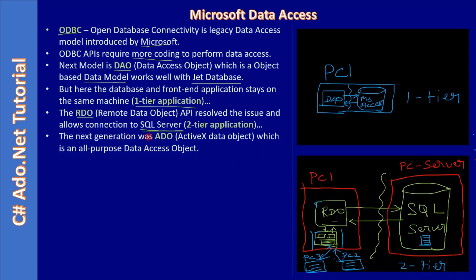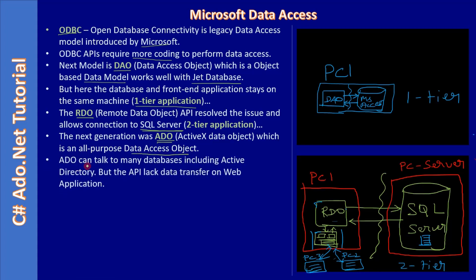The next generation beyond RDO was ADO — Active Data Object — which is an all-purpose data access object. ADO can talk to many databases, including Active Directory. However, its flip side is that it is not easy to transfer data over the web, and that is where ADO lags.